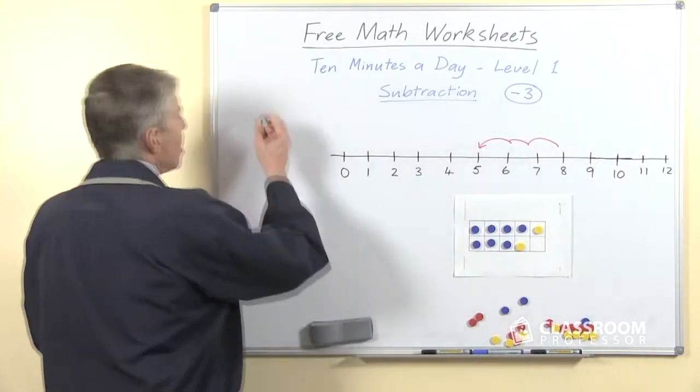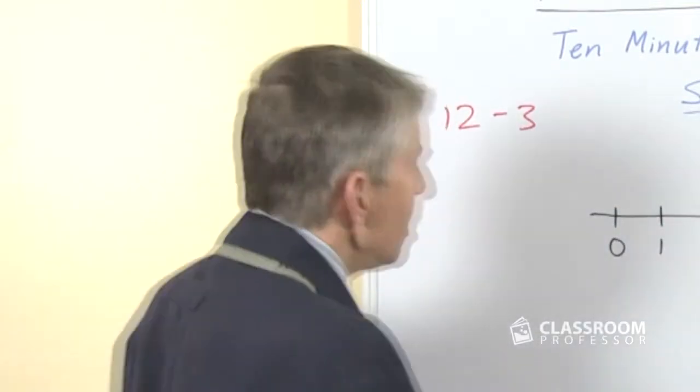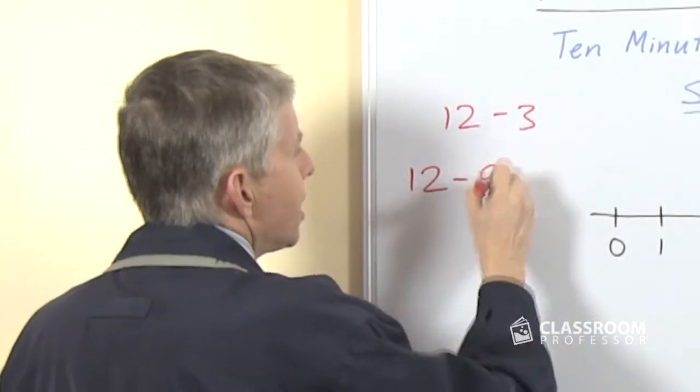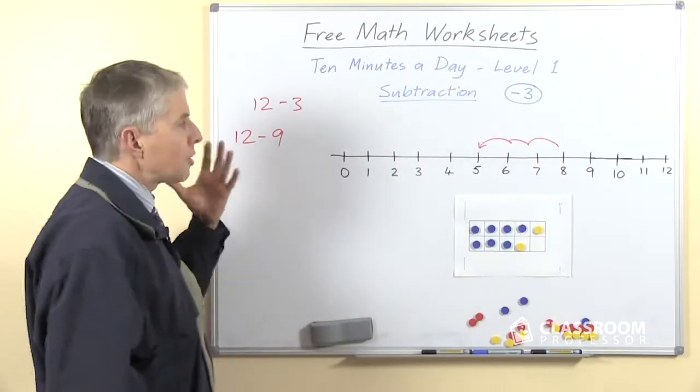Now that is okay when we have questions like 12 take away 3, but what would we do if we had a question like 12 take away 9? This is clearly more difficult.